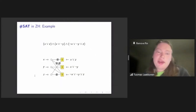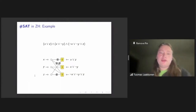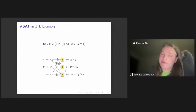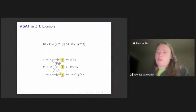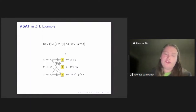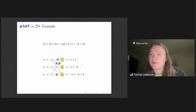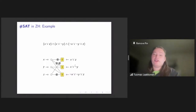For example, for the formula (X or Z) and (X or not Y) and (not X or not Y or Z), we get Z spiders for X, Y, and Z, and H boxes for each clause. The first clause connects to the X and Z spiders; the second connects to X and Y with a negation. The width of a clause determines how many legs the H box has — a clause of width two gives a two-legged H box.